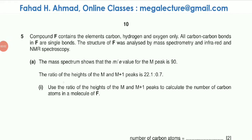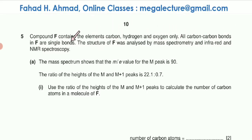Hi guys, let's start and try to solve this NMR question. The question is about a compound F that contains the elements carbon, hydrogen, and oxygen. All carbon-carbon bonds in F are single bonds. The structure of F was analyzed by mass spectrometry, infrared, and NMR spectroscopy — three different techniques are being used.